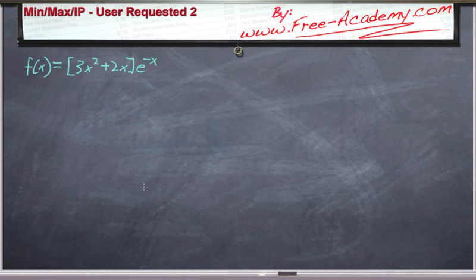In this lecture, presented by www.free-academy.com, we're going to be taking a problem submitted to us by one of our users. Now, this problem, we're supposed to find the minimums, maximums, and inflection points of the following function: f of x equals, in parentheses, 3x squared plus 2x, all times e to the negative x.